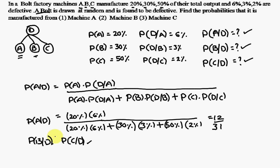So from the given data, the probability of machine A, probability of machine B, and probability of machine C are given, along with the probability of defective given A, defective given B, and defective given C. The question asks: if a bolt is chosen and found to be defective, what is the probability it is from a particular machine? This is solved using Bayes' theorem formula by substituting the values to get the answer. Thank you.